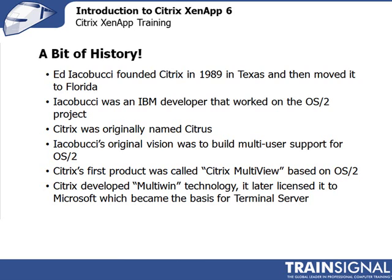Iacobucci left and started his own company, Citrix. The very first product Citrix came up with was called Citrix Multiview, based on OS/2 — it extended OS/2 to allow for multi-user support. For numerous reasons, OS/2 didn't take off; there was no support from either Microsoft or IBM in the marketplace. So as Windows became more popular, Iacobucci decided to build the next-generation multi-user support on the Windows platform, and thereby Citrix developed a technology called MultiWin. MultiWin is essentially the grandfather of Terminal Server — the foundation and building block of what later became Terminal Server.